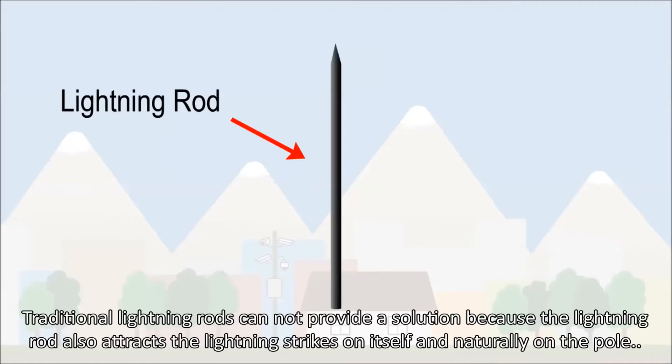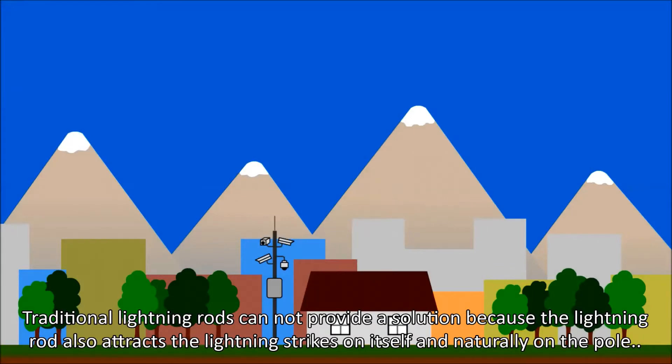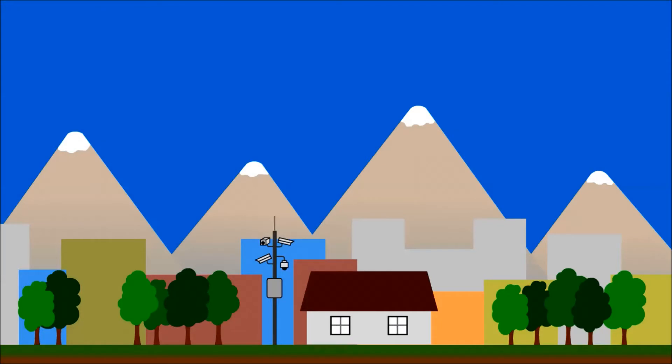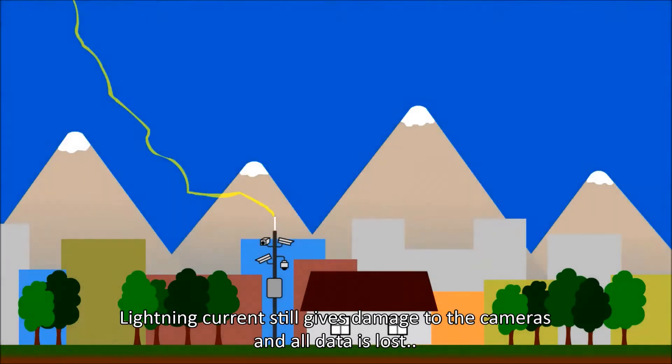Traditional lightning rods cannot provide a solution because the lightning rod also attracts the lightning strikes on itself and naturally on the pole again. The lightning current still gives damage to the cameras and all data is lost.